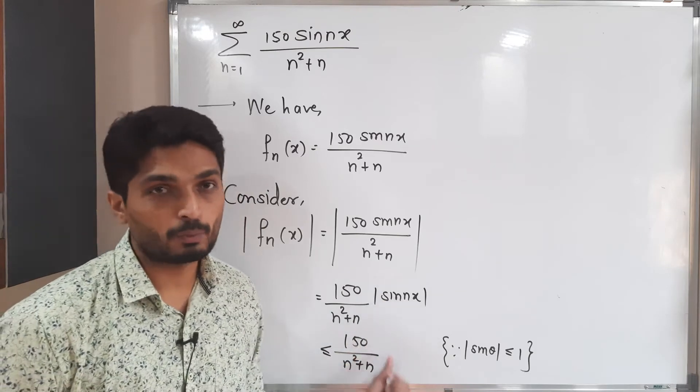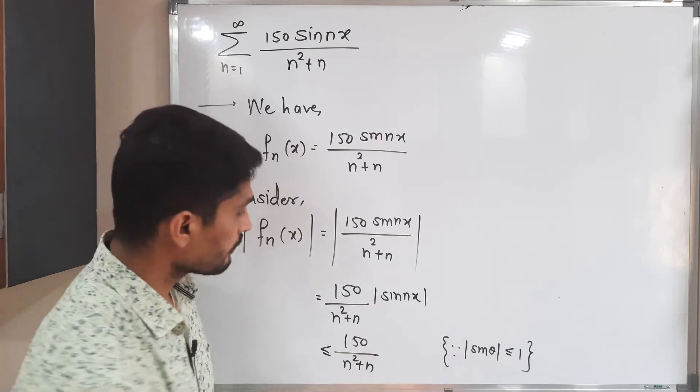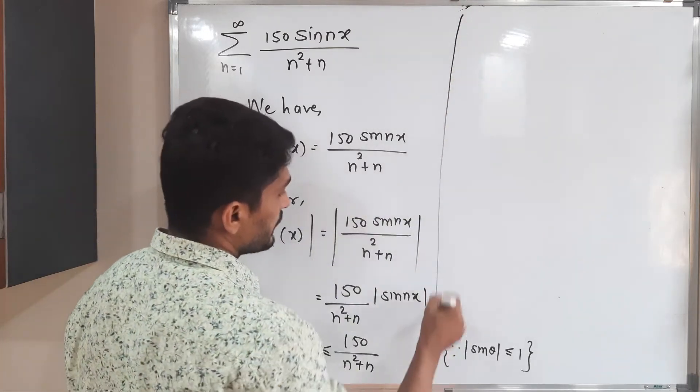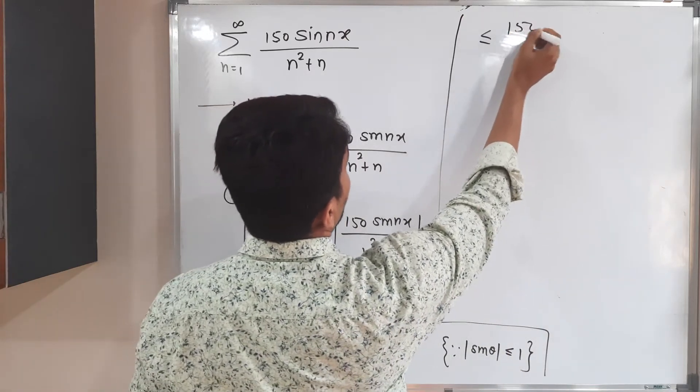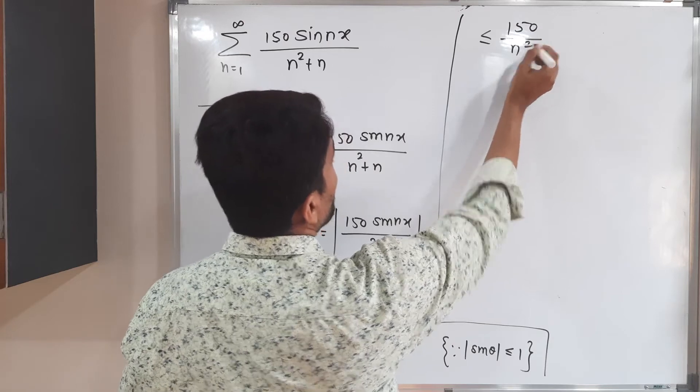So we have this is less than or equal to 150 divided by n square plus n. Since I could replace it by what we got, so I will continue here. This is less than or equal to 150 divided by n square.